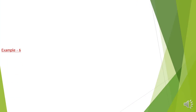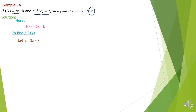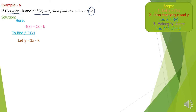This is example 6. You can see the given parts: f(x) = 2x−k is given and f⁻¹(2) = 7 is also given. We have to find the value of the variable k. Let's start the solution. f(x) = 2x−k is given first. We have to find the inverse of f, so to find f⁻¹(x), you can see on the top right corner the same steps.